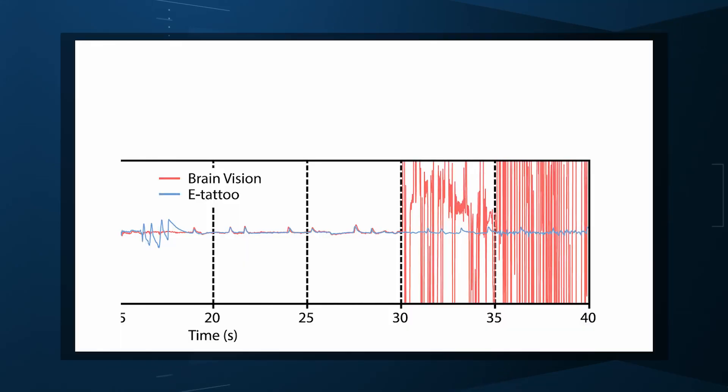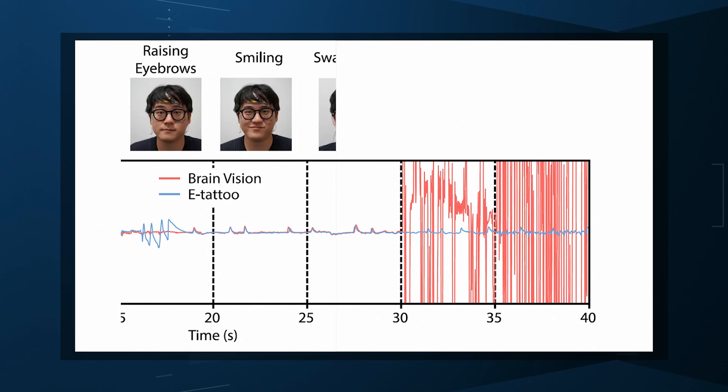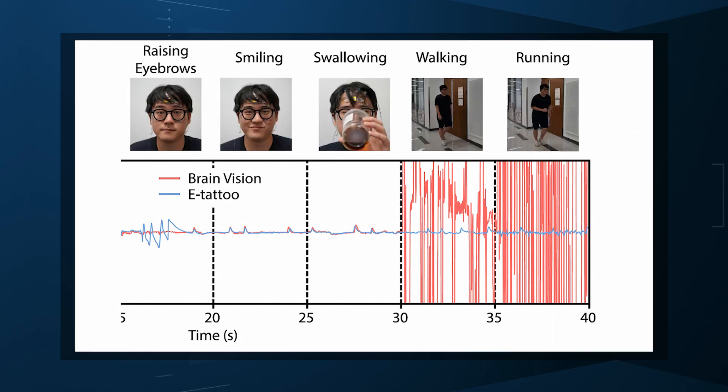One of the problems with conventional EEGs is how sensitive they are to motion. You turn your head, you get a bunch of noise. God forbid you walk around or something. The signal becomes useless. Not so with the tattoo. These graphs show the electronic noise levels when the participant was doing various motions. Broadly speaking, you can see that the tattoo continues providing solid, reliable recordings even when walking or running while the EEG goes all over the place with noise. The only exception to this was eyebrow raising, maybe not surprising because the tattoo goes on the forehead.